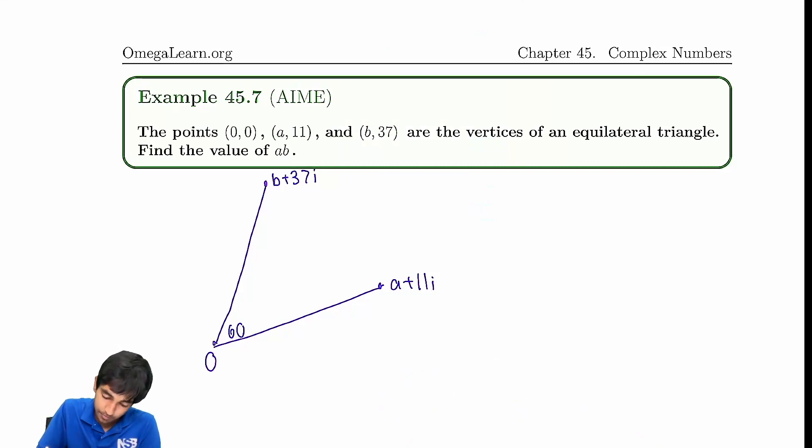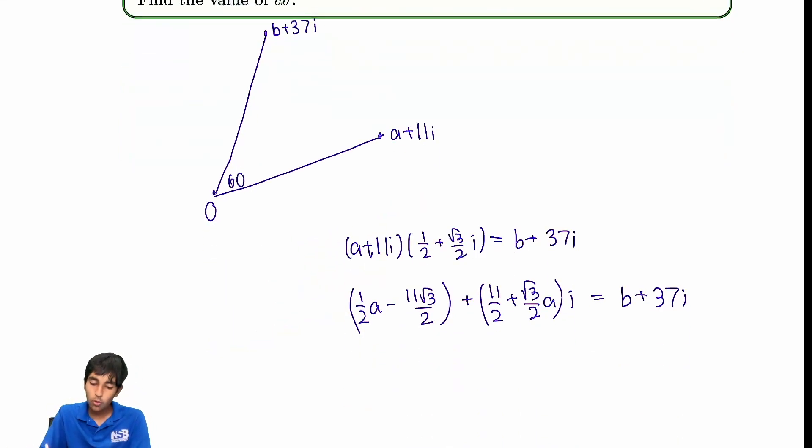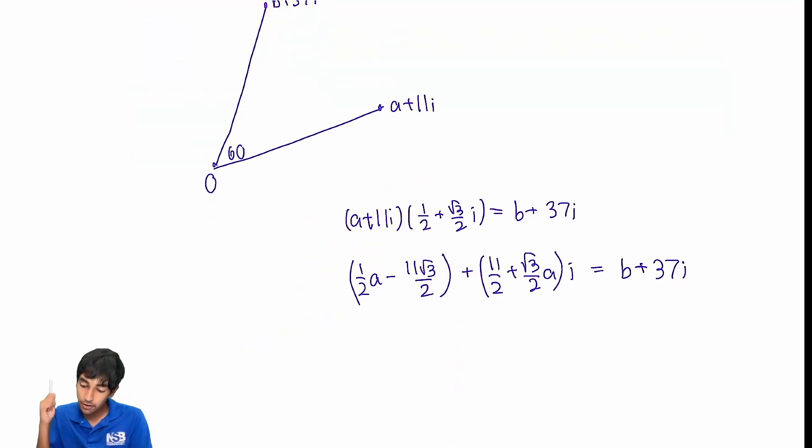Let's write the equation for rotation. We have (a plus 11i) times cis of 60, which is half plus root 3 over 2i, equals b plus 37i. And now we just compare real parts and imaginary parts. The real part is half a minus 11 root 3 over 2.